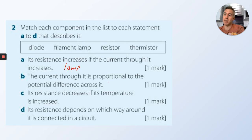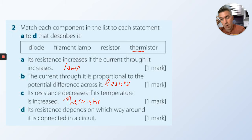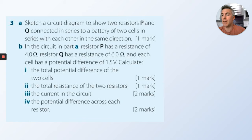Ohm's law applies to things like resistors, assuming the temperature is constant. Its resistance decreases if its temperature is increased — that's a thermistor. And its resistance depends on which way round it is connected in a circuit — that is a diode, useful for later.